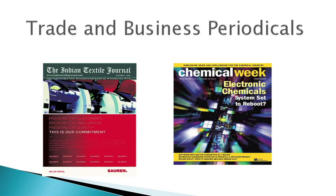The second type are trade and business periodicals. These are published by trade organizations and commercial publishers. They cover articles, news, trends and issues for specific businesses and industries. Authors of articles in these journals can be professionals in the field or journalists working for the publisher. Examples include Indian Textile Journal and Chemical Week.